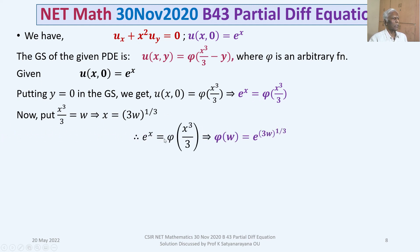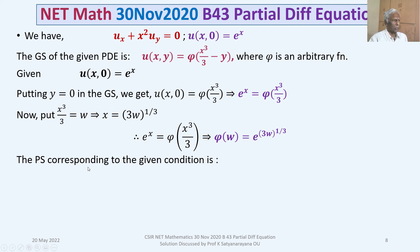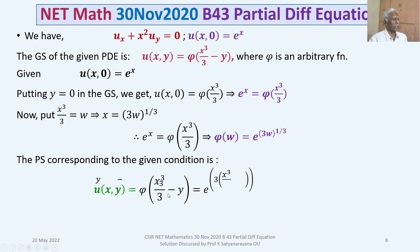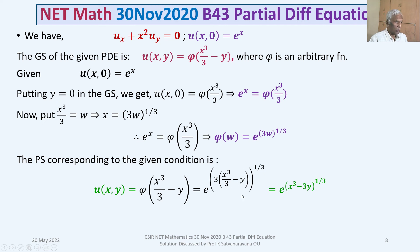Therefore φ(w) = e^(3w)^(1/3). Substituting back, the particular solution is u(x, y) = φ(x³/3 − y) = e^(3(x³/3 − y))^(1/3), which simplifies to e^(x³ − 3y)^(1/3).